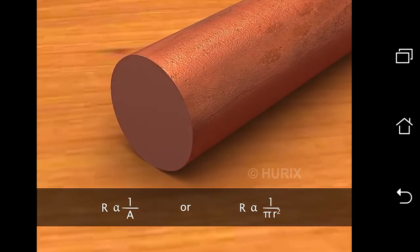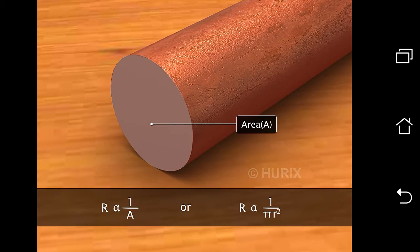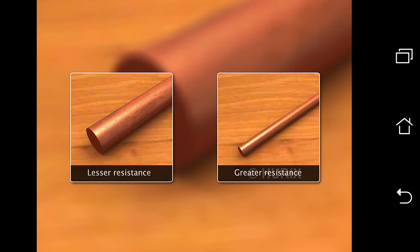Resistance R is inversely proportional to the thickness of the wire A, where A is the area of the wire's cross section. In other words, the thicker the wire, the lesser the resistance.